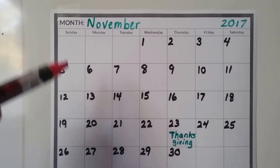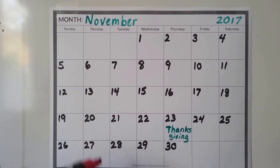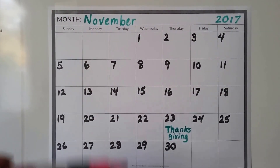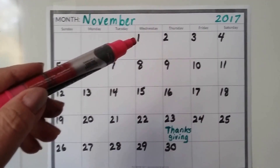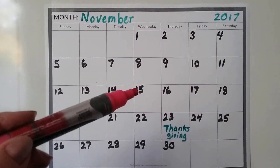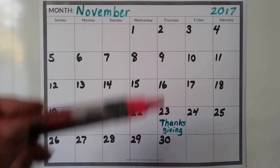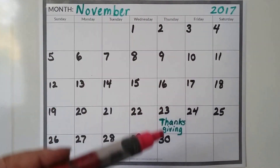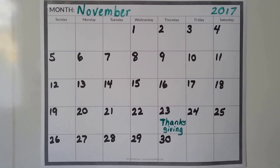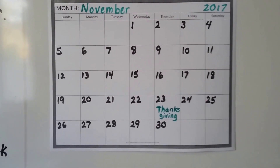And then all the days come down those columns. The 1st is on a Wednesday, the 8th is on a Wednesday, the 15th is on a Wednesday — these are all Wednesdays. These are all Thursdays. We can see there's Thanksgiving, November 23rd.